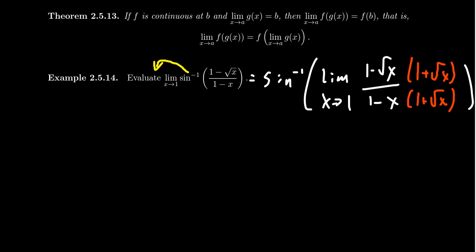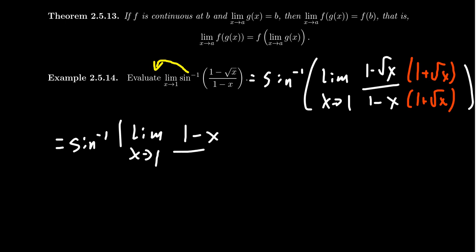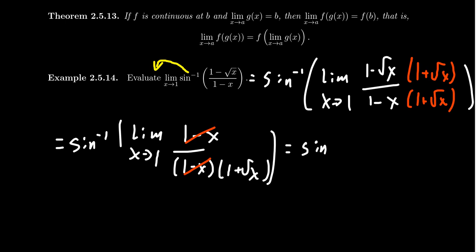Multiplying these things out, we're going to end up with sine inverse of the limit as x approaches one. In the numerator, when you FOIL that out, you're going to get one minus x. In the denominator, we leave it factored — we have a one minus x and a one plus the square root of x — and the one minus x is going to cancel out. So the simplified limit will be sine inverse of the limit of one over one plus the square root of x as x approaches one.